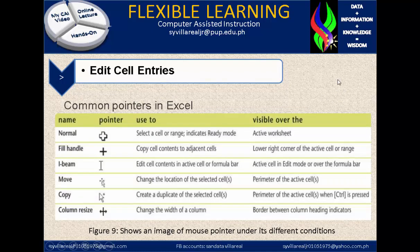Common pointers in Excel. This figure shows an image of mouse pointers under different conditions. First, normal: a white bold pointer used to select a cell or range; indicates ready mode and is visible over the active worksheet. Second, fill handle: a black cross pointer that copies cell contents to adjacent cells; visible over the lower right corner of the active cell or range.